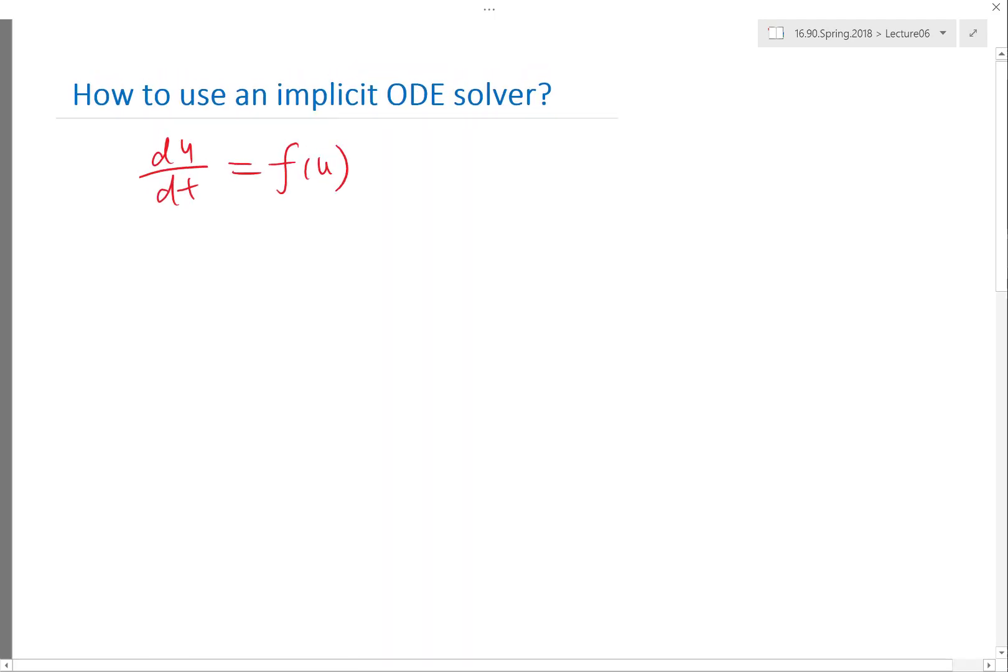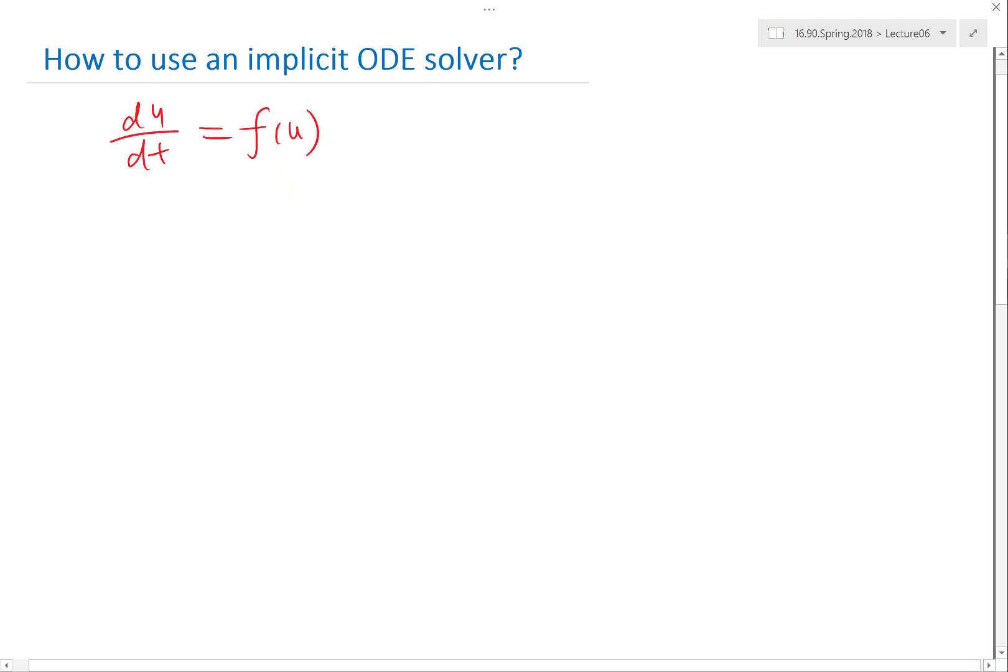So let's start with backward Euler. And the other scheme is basically the same, right? Let's actually say I have this equal to f of u_n+1, where f is a known function, but it's not just the lambda times u.